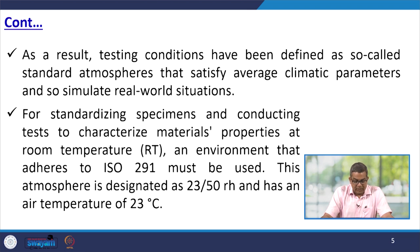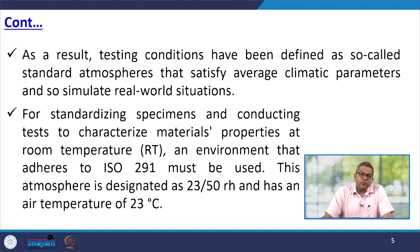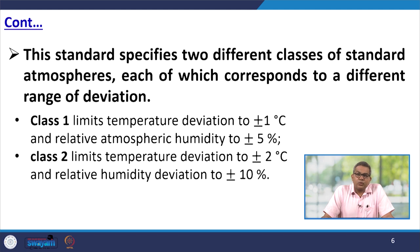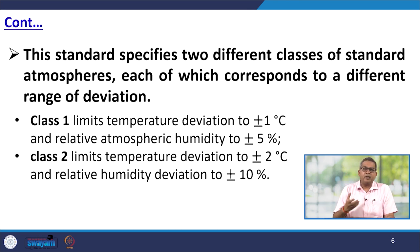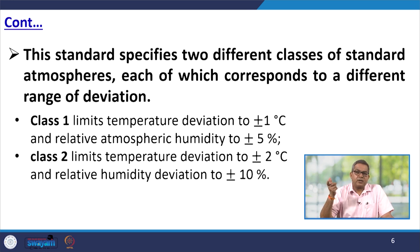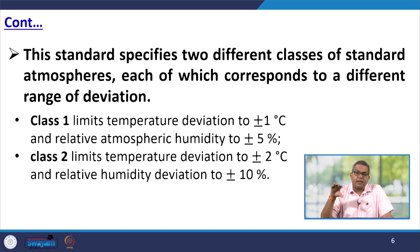One popular standard in this aspect is ISO 291. The atmosphere is usually designated as an air temperature of 23 to 25 degrees Celsius as per the standard. The standard specifies two different classes of standard atmosphere, each corresponding to a different range of deviation. Class 1 limits the temperature deviation to plus or minus 1 degree Celsius and relative humidity (RH) deviation to plus or minus 5 percent. Class 2 limits the temperature deviation to plus or minus 2 degrees Celsius and RH deviation to plus or minus 10 percent.